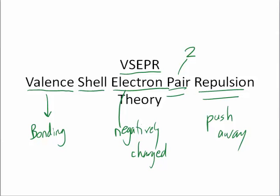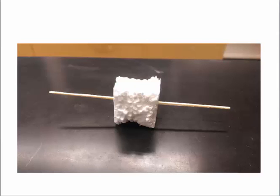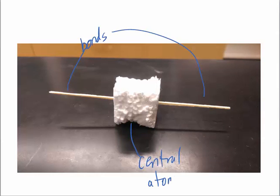So in class, we're involved in an activity where we try to model what that looks like using toothpicks and styrofoam. As you can see from this, the toothpicks represent the bonds and the styrofoam represents the central atom. And you can see from this that the angle between the bonds, from here to here,